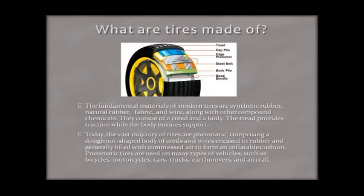The fundamental materials of modern tires are synthetic rubber, natural rubber, fabric, and wire, along with other compound chemicals. They consist of a tread and a body. The tread provides traction while the body ensures support.